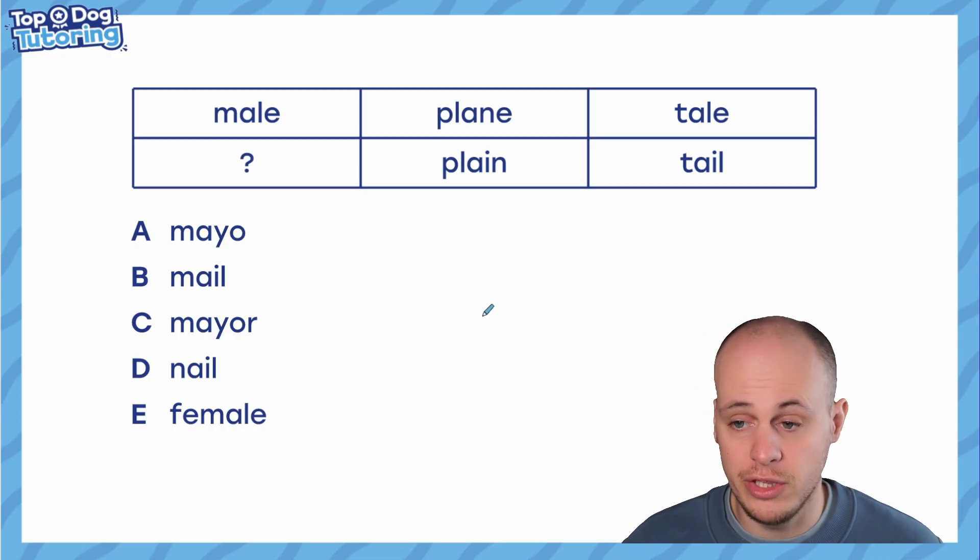Very simply, you have got six words in a grid, one of them is missing, and you have to work out what the link is between these words and use that to solve the missing word. Now, the cool thing about these questions is the link between the words can kind of come in one of two ways.